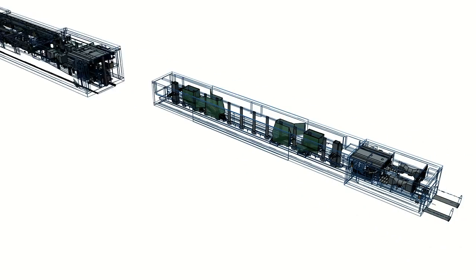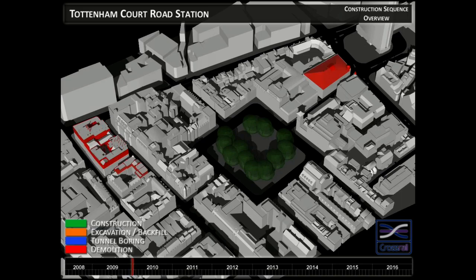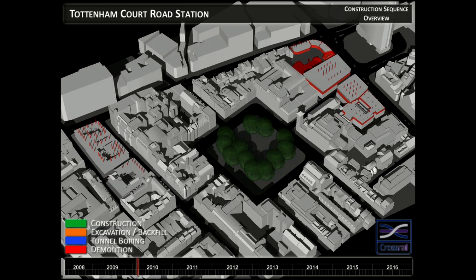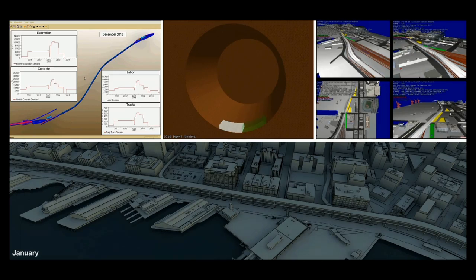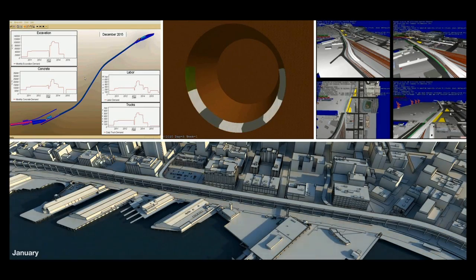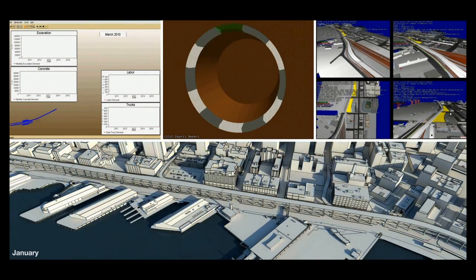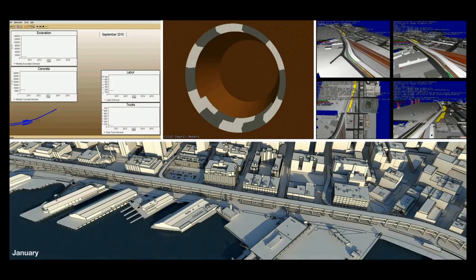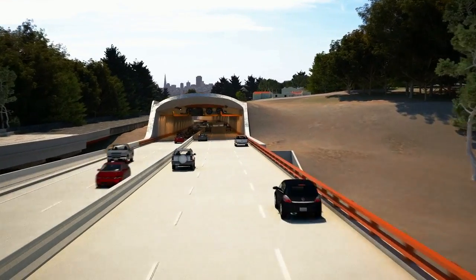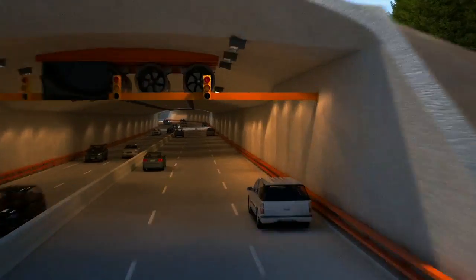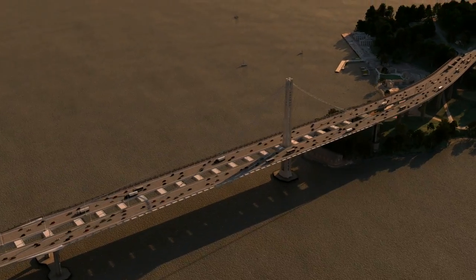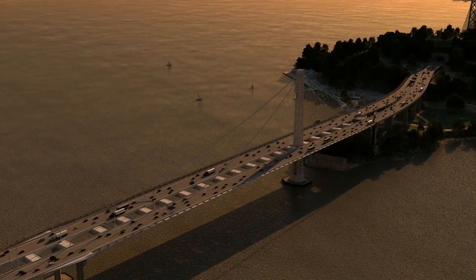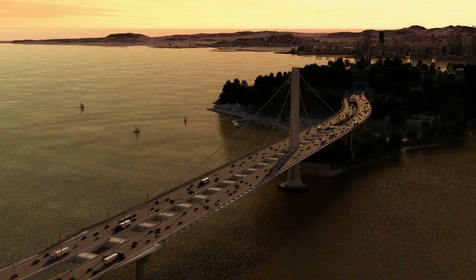Both technologies are based on three-dimensional modeling, which can be expanded to four dimensions by adding the element of time, or five dimensions by adding cost to the model. VDC and BIM models allow construction engineers to anticipate and resolve problems pertaining to construction staging, traffic management, and utility relocation. VDC and BIM also facilitate communication and provide visual outputs to explain projects to stakeholders and non-technical audiences.